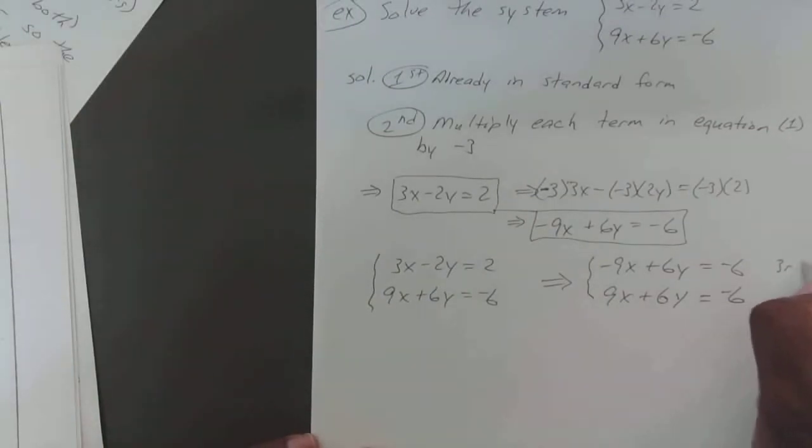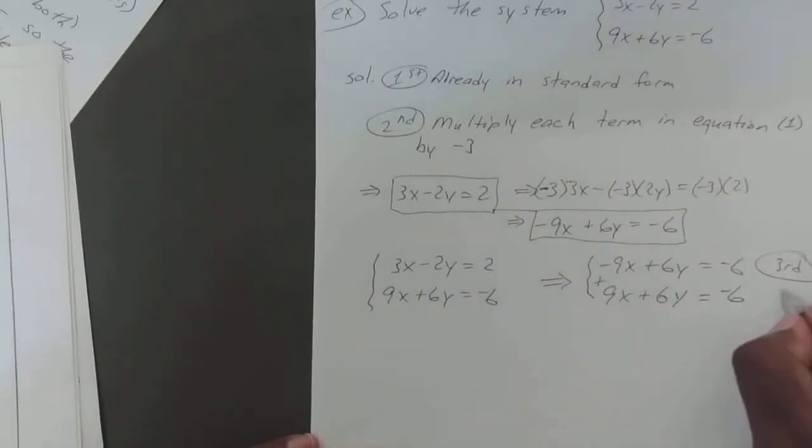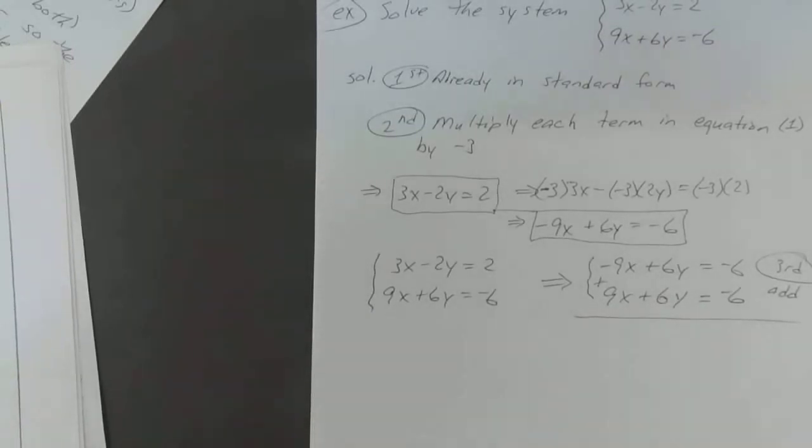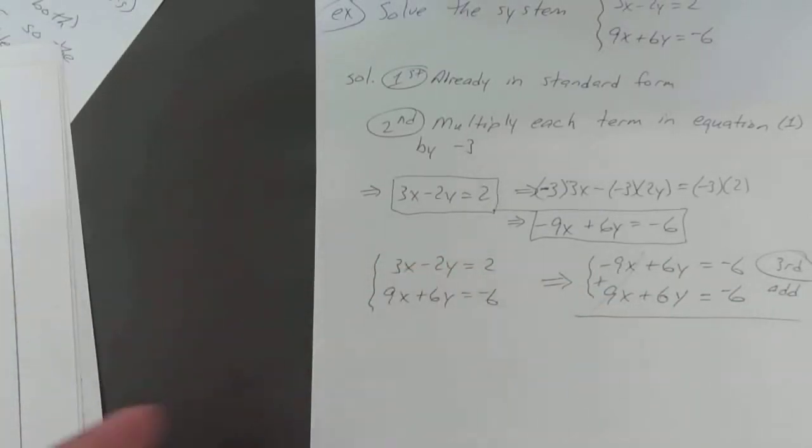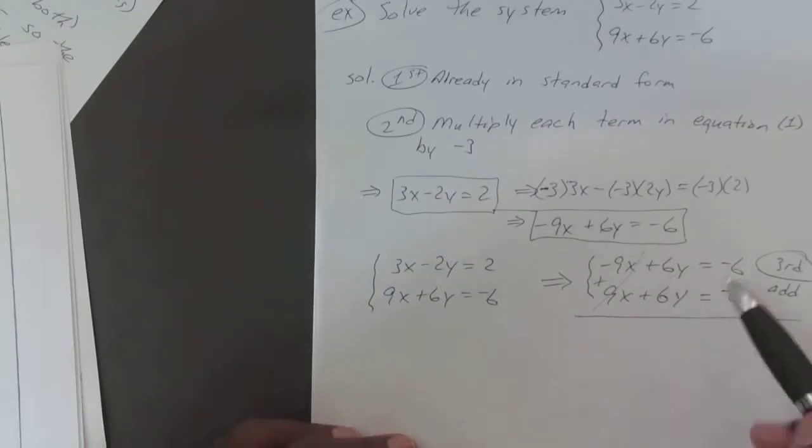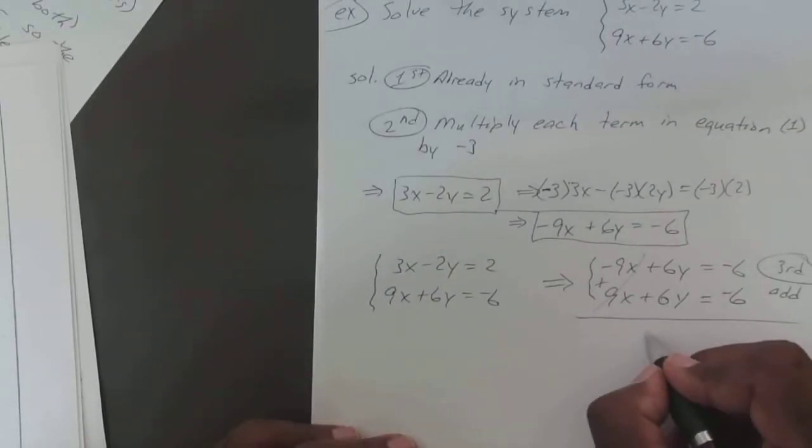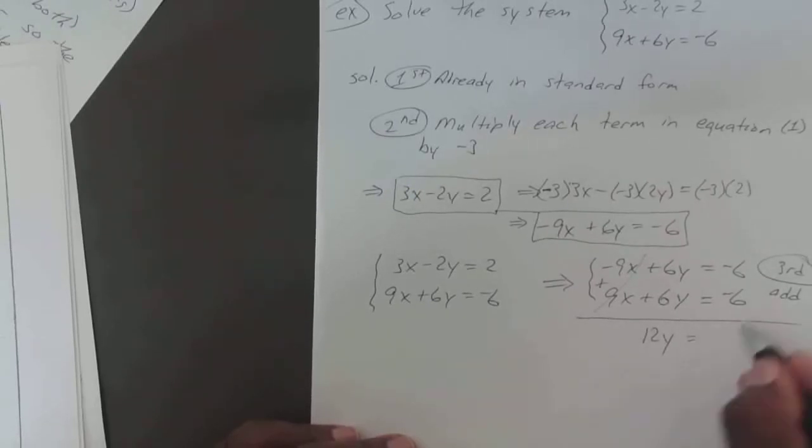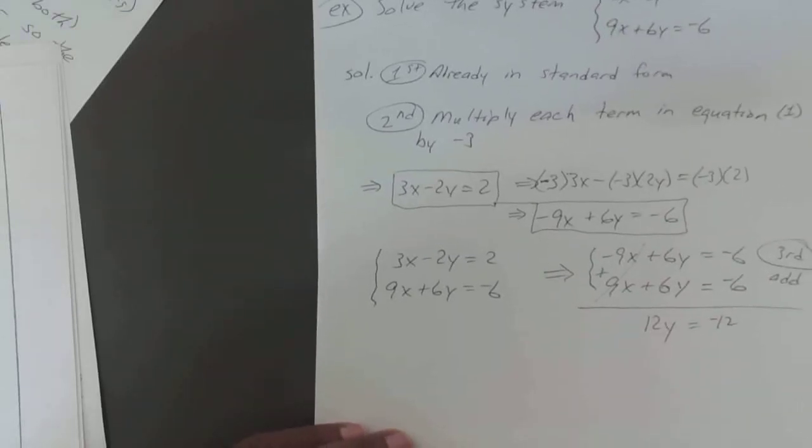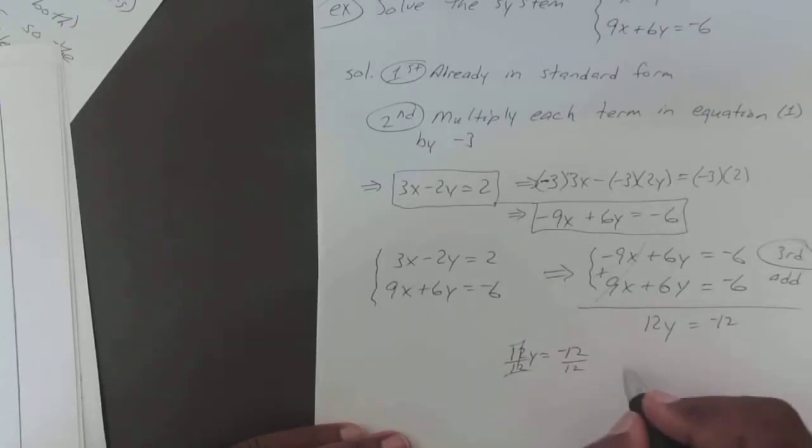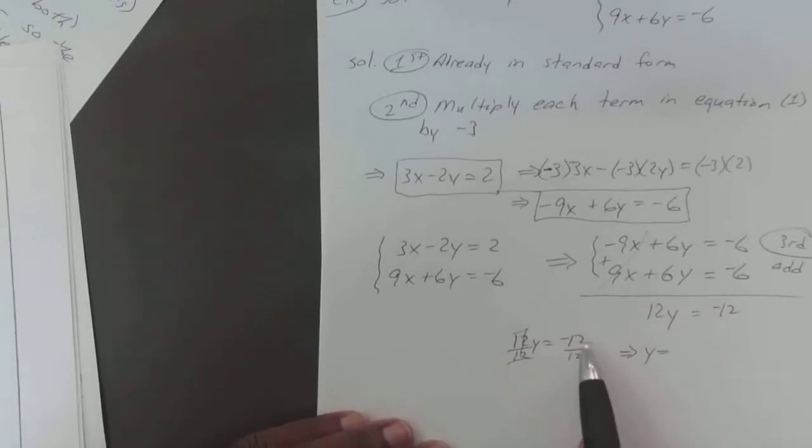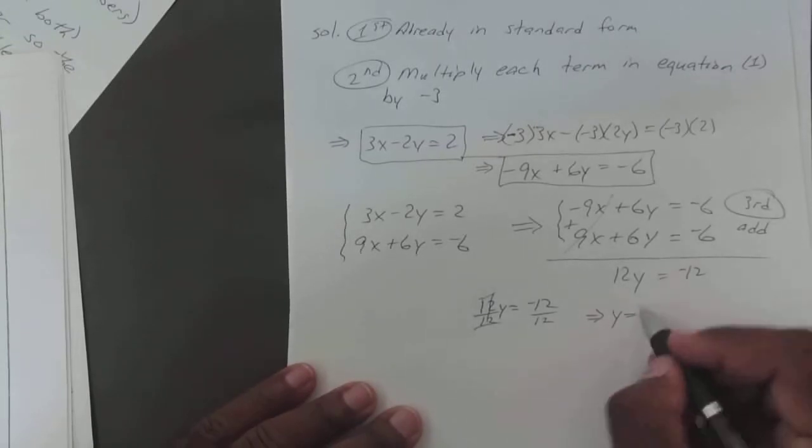Equals negative 6. So we might as well go ahead and just add them together, since we're here. So you have negative 9x plus 9x is 0, so that disappears just like we wanted. You have 6y plus 6y is 12y. Negative 6 times negative 6 is negative 12. So you have 12y equals negative 12. Divide both sides by 12. That cancels out. So you're left with y equals negative 12 divided by 12, which is negative 1.